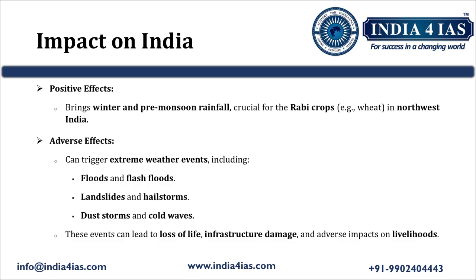The impact of Western Disturbance on Indian weather and climate includes both positive and negative effects. Positively, they bring winter and pre-monsoonal rainfall which is crucial for Rabi crops, especially wheat in the Northwestern part of India. Their adverse effects include triggering extreme weather events like floods, flash floods, landslides, hailstorms, dust storms, and cold waves.